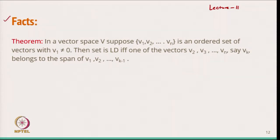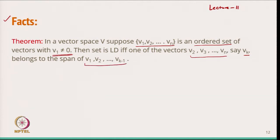The theorem we are going to discuss is: in a vector space V, suppose we have n vectors given in an ordered set — meaning V1 comes before V2, V2 before V3, and so on. We cannot change the order. This is a set of vectors with V1 non-zero. Then the set is linearly dependent if and only if one of the vectors, say Vk, belongs to the span of the previous vectors V1, V2, ..., Vk-1.